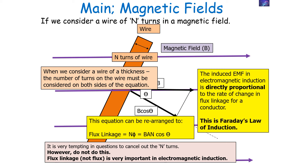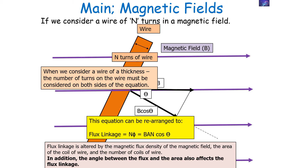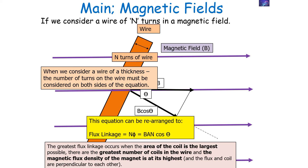This is actually Faraday's law of induction. It's important to note that flux linkage is altered by the magnetic flux density of the magnetic field, the area of the coil of wire, and the number of coils of the wire — B, A, and N. In addition, the angle cos θ between the flux and the area also affects your flux linkage, which in layman's terms is the number of field lines a conductor will cut in that chosen region of space. The greatest flux linkage occurs when the area of the coil is the largest possible, you've got the greatest number of coils in the wire, and the magnetic flux density is at its highest, whilst the flux and the coil are perpendicular to each other.